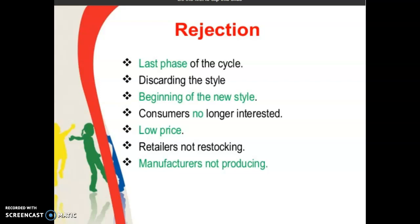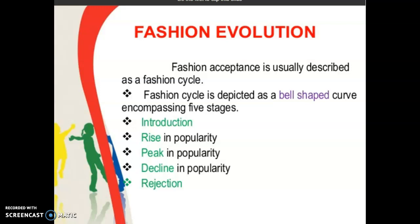I would like to summarize the fashion cycle. The five stages are: introduction, rise in popularity, peak in popularity, decline in popularity, and rejection. These are the five stages of the fashion cycle. We will see in the next class with a new topic. Thank you.